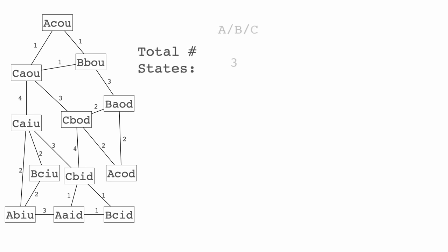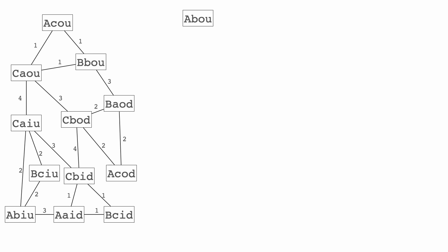There are only 12 possible states here. But the total number of states — since we have three chambers, three arms, in/out, and up/down — is actually 36. So we only found one third of the possible positions. At this point you could guess: well, we started with A C O U; we can also start with A B O U hypothetically, and we could also start with A A O U.